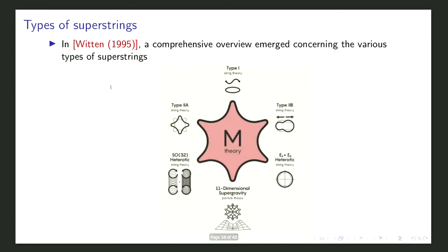Only recently in 2021 was Berkovits able to make spacetime supersymmetry manifest in the spinning description of the string. He did this by constructing a dynamical twist mapping the N=1 spinning description to the N=2 twisted description, known as the pure spinor formalism. In 2005 a comprehensive overview emerged concerning the various types of superstrings: Type IIA, Type IIB, Type I SO(32) heterotic, E8×E8 heterotic — and something at 11 dimensions crucial for interpolating among these theories.